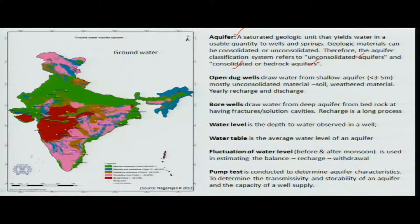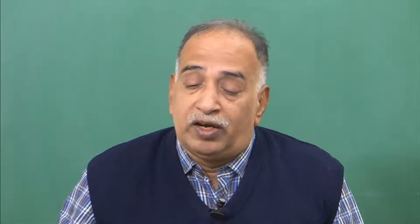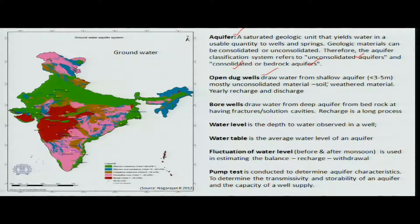Below the surface is where ground water is stored. There are two facilities used to withdraw it. The first is the open dugwell, which has a diameter of about 3 to 4 meters and a depth of 3 to 10 meters. Water is obtained from soil or weathered material. In open dugwells, seepage is visible and recharge-discharge can be measured visibly.